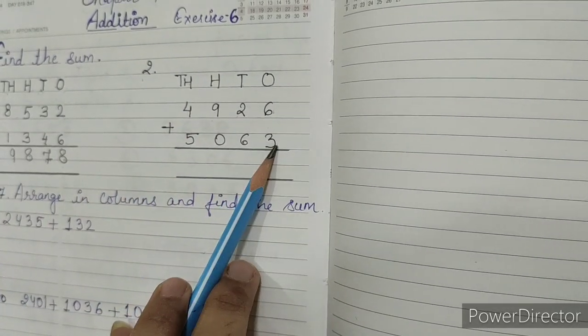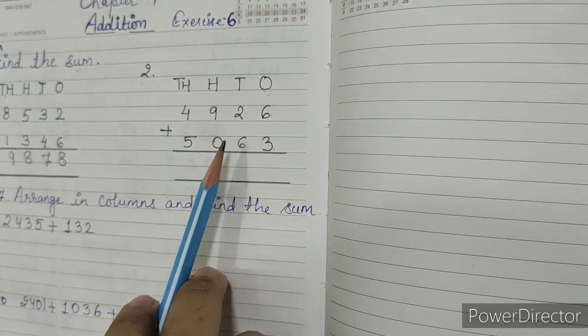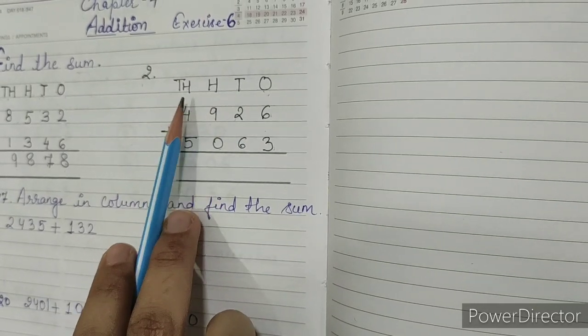Now in the next number, 3 is in ones place, 6 is in tens place, 0 is in hundreds place, and 5 is in thousands place.